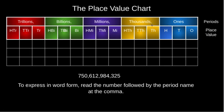So we have the ones period, the thousands period, the millions period, the billions period, and the trillions period. Every period is divided into three branches, and these branches are known as place values. The trillions period is divided into the hundred trillions place, ten trillions place, and the trillions place. The billions period is divided into the hundred billions, ten billions, and billions place. The millions period into hundred millions, ten millions, and millions. The thousands period into hundred thousands, ten thousands, and thousands. And the ones period into hundreds, tens, and ones.